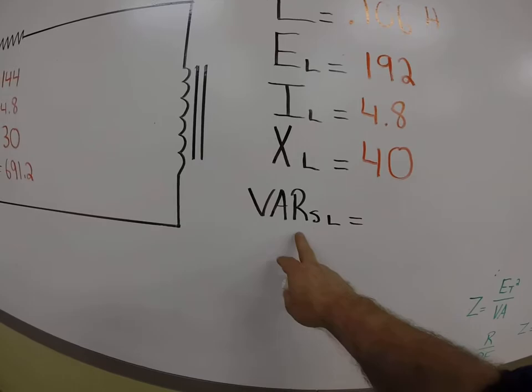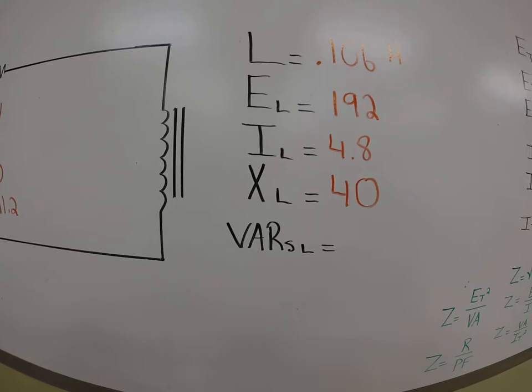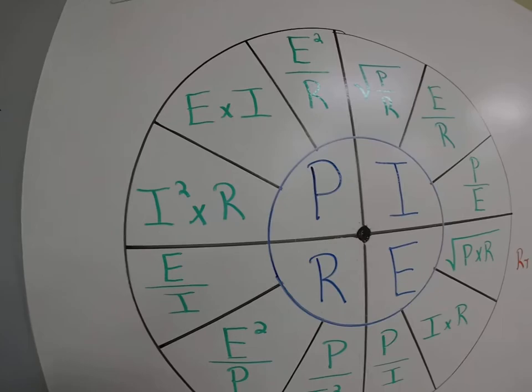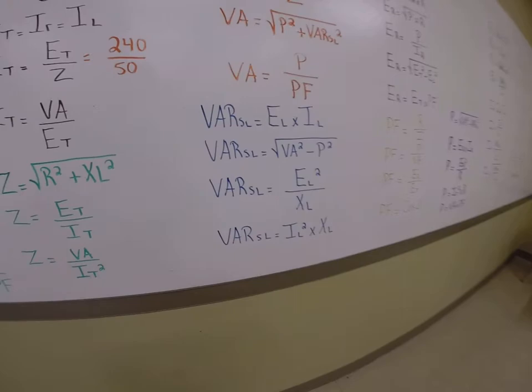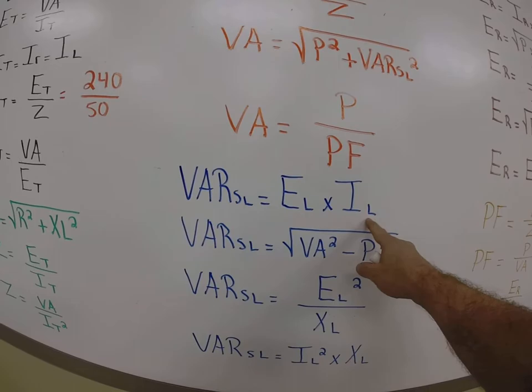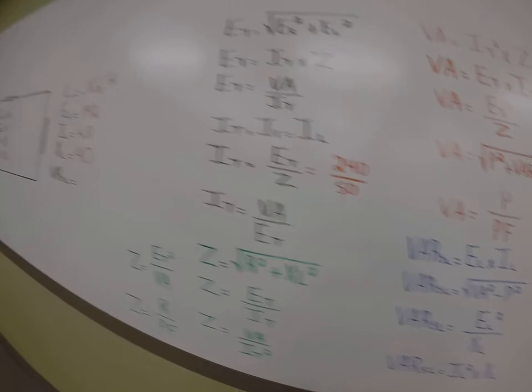Now we could pretend that this is P, and if we were to solve for this using Ohm's law formula, we have voltage, current, and resistance. We can use our Ohm's law wheel to solve for VARs by just coming over here and saying, I'm going to use any one of these to solve for VARs. Or you can then come over and say, which formula says VARs equals? Well, let's come over here. I've got four of them.